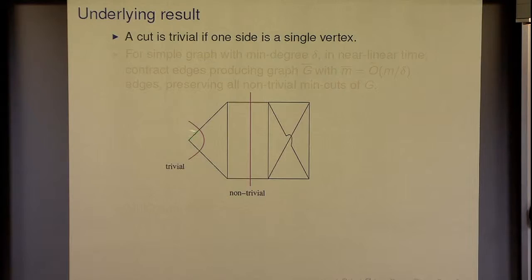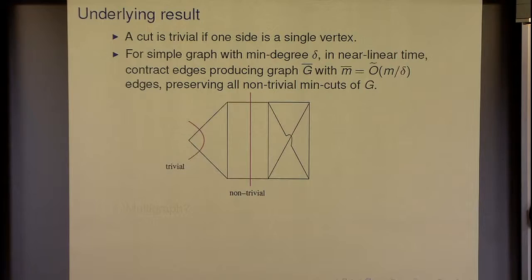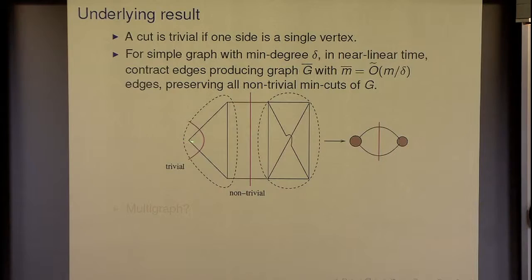The underlying result: a trivial cut is one that takes out a single vertex — the boring ones — and a non-trivial one is like the example shown. If we have a simple graph with minimal degree delta, then in nearly linear time we can contract some edges, producing a graph with delta fewer edges, preserving all non-trivial min-cuts. So it's okay to destroy a trivial cut, but we cannot destroy any non-trivial cut, and yet we get a graph with much fewer edges.